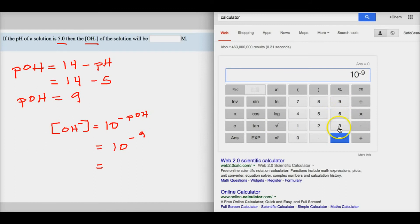And it looks like the hydroxide ion concentration of this solution will end up being 1.0 times 10 to the negative 9 moles per liter.